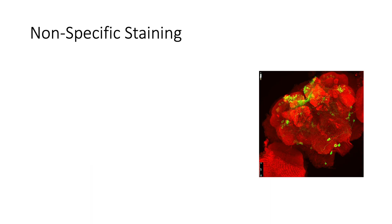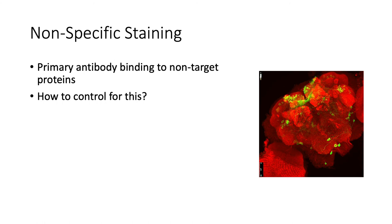A common issue researchers find when using antibodies is non-specific staining. This happens when the primary antibody binds to non-target proteins, not to the protein of interest. So, how can we control for this?